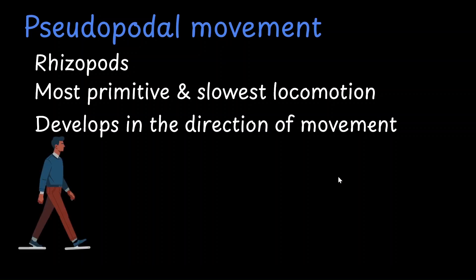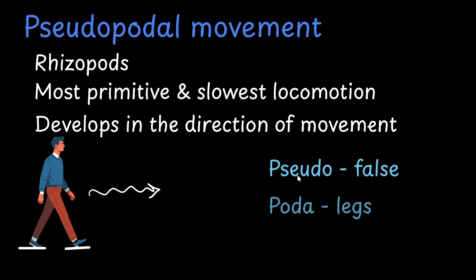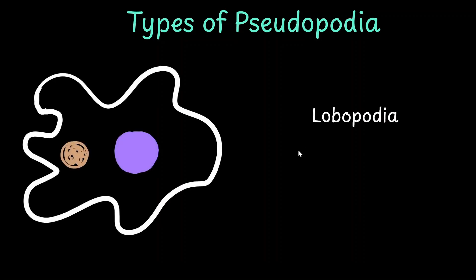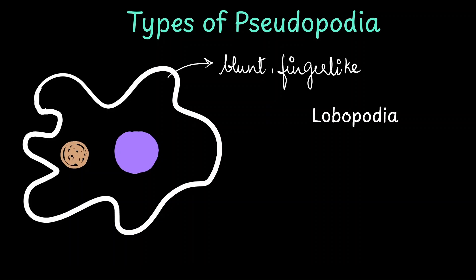It's almost similar to how humans walk — when we want to move in a certain direction, we put our foot out in that direction. In the same way, amoeba also puts out its pseudopodia. Hence the term: pseudo meaning false, poda meaning legs — pseudopodia are the false legs of amoeba. There are different types of pseudopodia. The most common form we usually discuss is lobopodia, which is seen in amoeba — blunt finger-like projections seen in amoeba and in entamoeba.